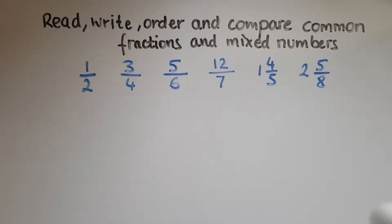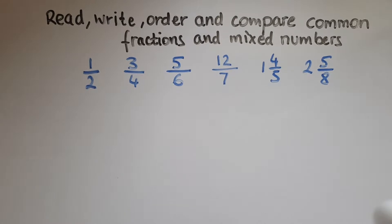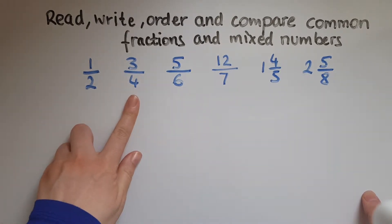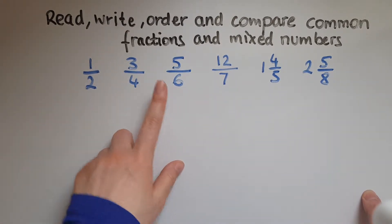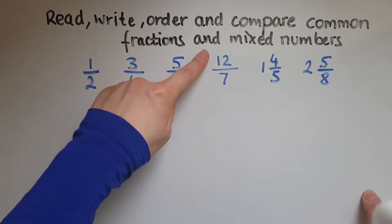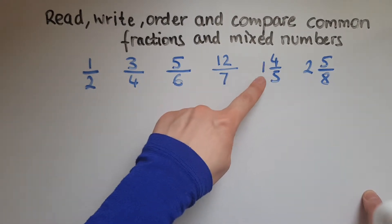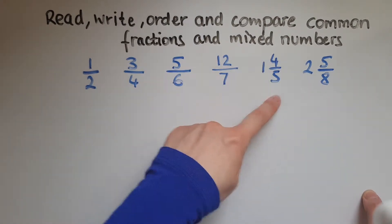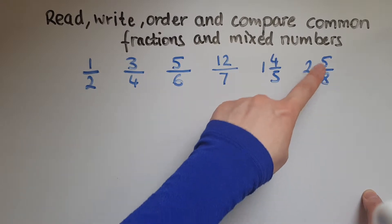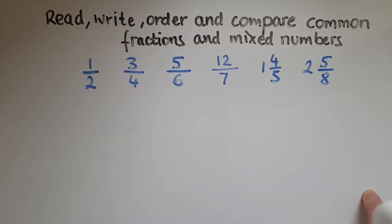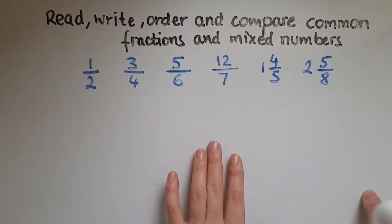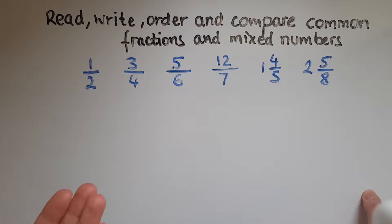In this video, we'll learn to read, write, order and compare common fractions and mixed numbers. So we've got: half, a quarter, five sixths, twelve sevenths, one and four fifths, two and five eighths. I've written them and I'm reading them as well, so this should help you with the reading of fractions.